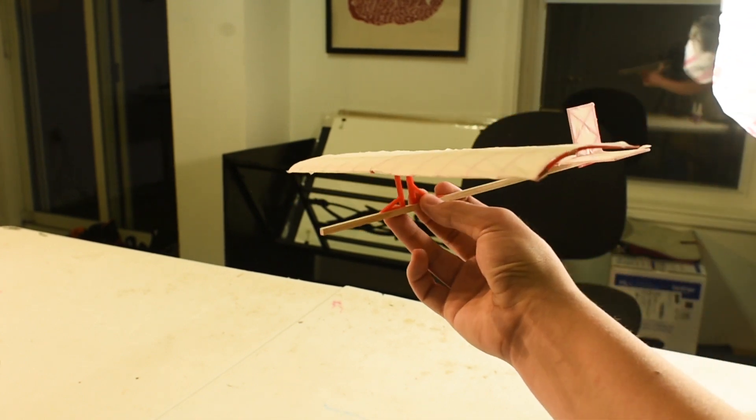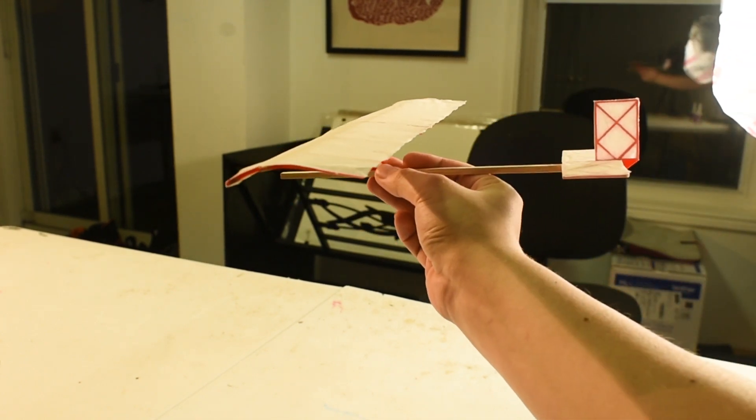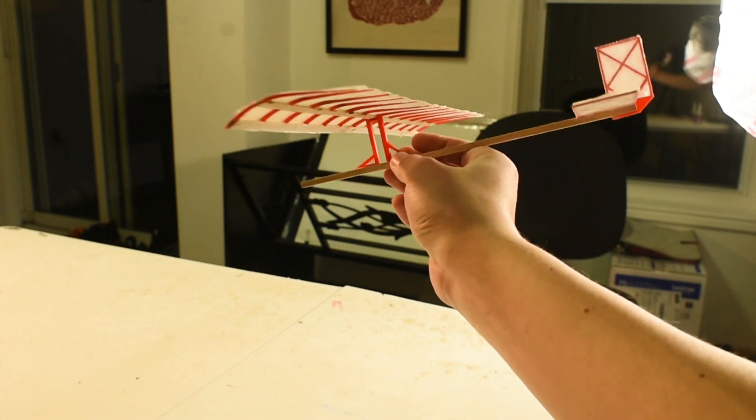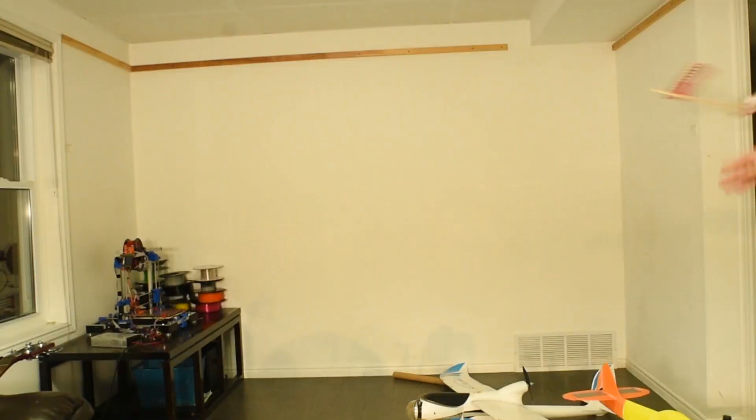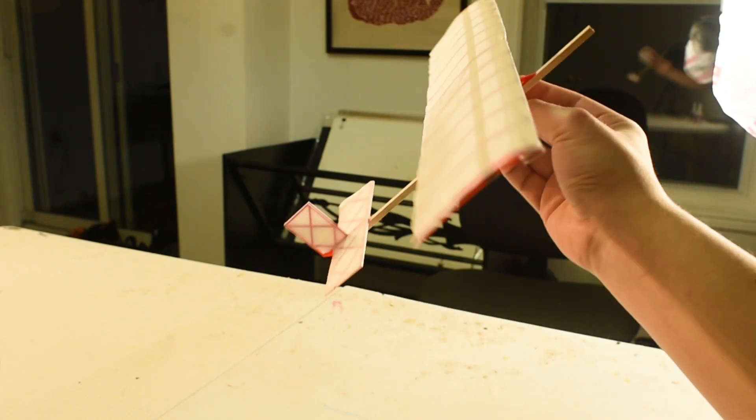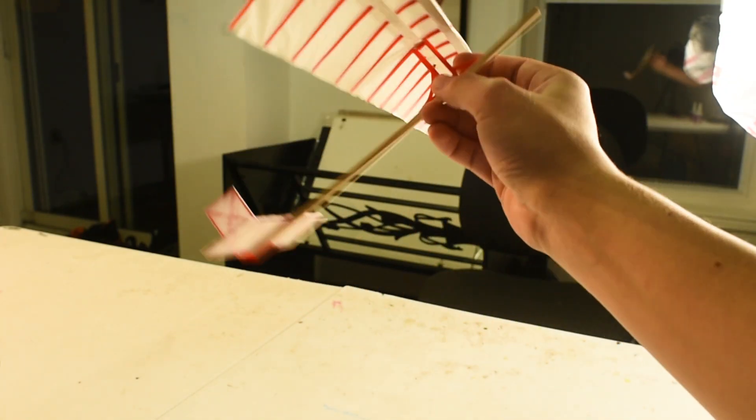All right guys, so I have a bit of an issue here. Now, the problem is that this glider is way too tail heavy right now, so if I hold it by the desired center of balance, it just dips down like that. So, I'm going to have to add some nose weight and hopefully fix this issue.